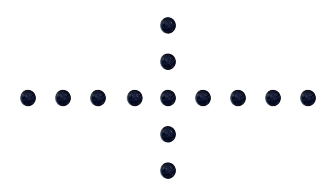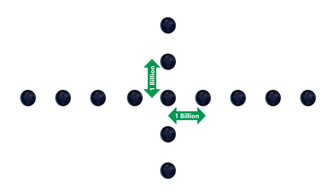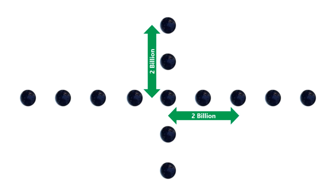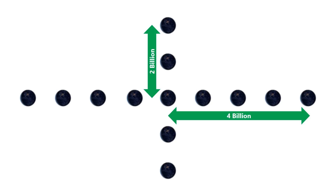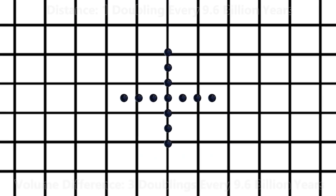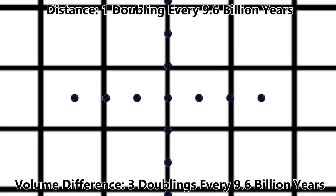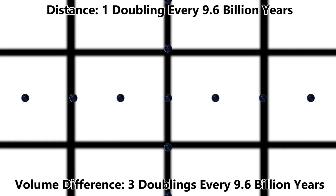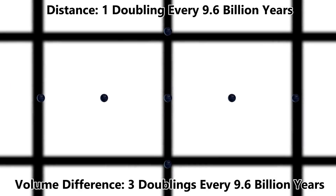Let's say that we have a bunch of planets, and we are the planet at the center. The distances between us and the closest planets is about 1 billion light years, and between us and the second closest planets is about 2 billion light years. The distances are so huge to make sure we are not gravitationally bound to any of those planets. After some calculations, the amount of time it takes for the distance between us and those planets to double is about 9.6 billion years. In terms of volume, however, it takes less time for the volume difference to double.